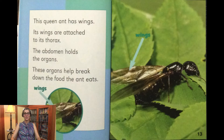This queen ant has wings. Its wings are attached to its thorax. The abdomen holds the organs. These organs help break down the food the ant eats.